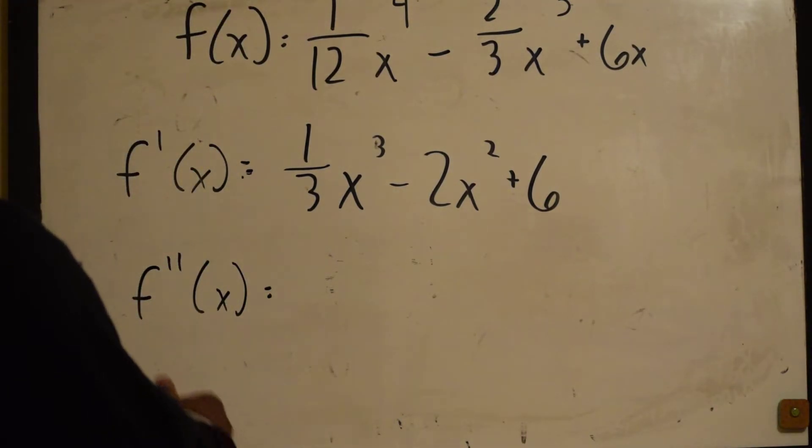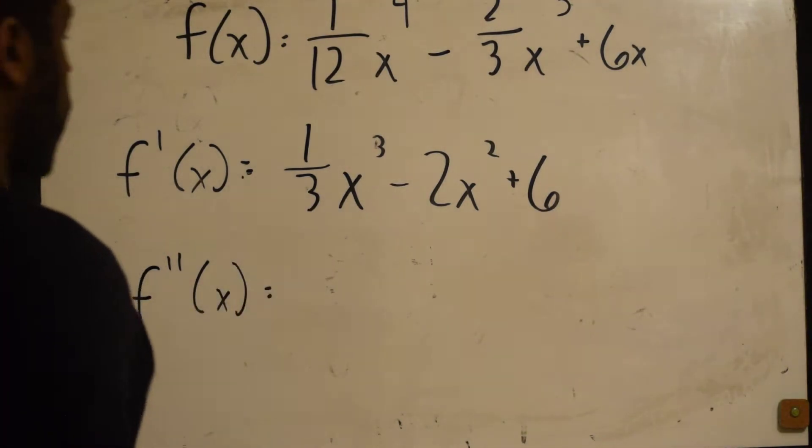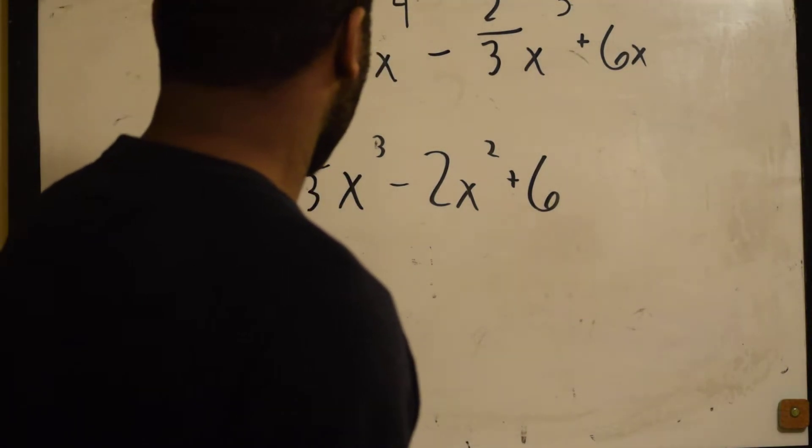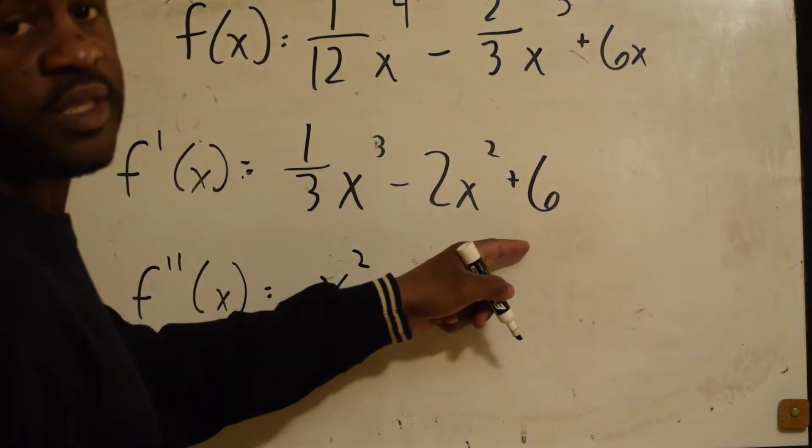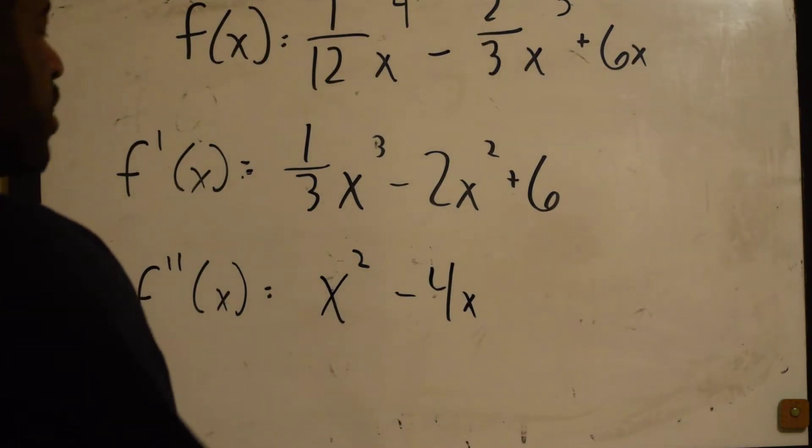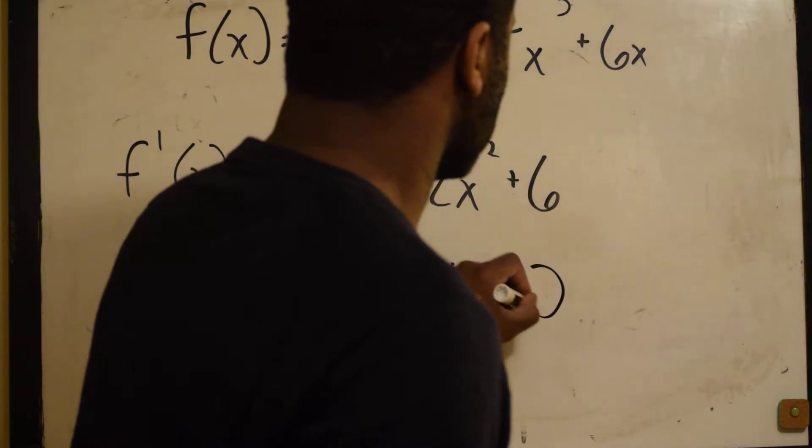Alright, f double prime, 3 times 1/3, that would be 1 x squared minus 4x. The 6 falls off. Remember, for our inflection points, we set this equal to 0.